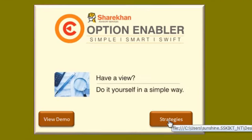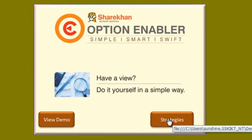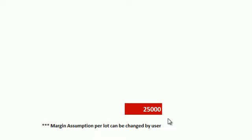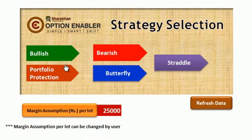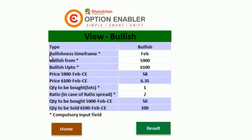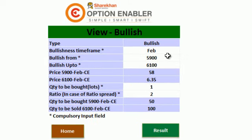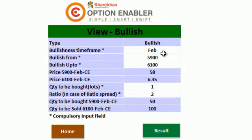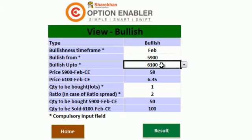We will be discussing three strategies on the bullish side and three strategies on the bearish side. First I will start with the bullish side. The first strategy is bull spread — we are doing a 5900-6100 bull spread. Let's look at Options Enabler; we will punch those trades into the Options Enabler and see what results we get.